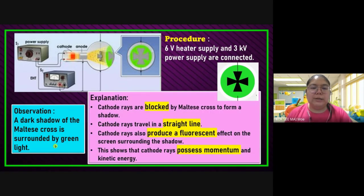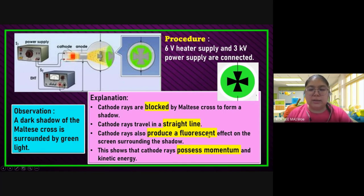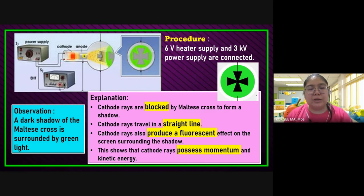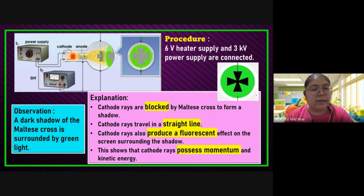You can see a dark shadow of the Maltese cross surrounded by green light. The explanation: cathode ray is blocked by the Maltese cross to form a shadow. Cathode ray travels in a straight line. Cathode ray also produces a fluorescent effect on the screen surrounding the shadow. This shows that cathode ray possesses momentum and kinetic energy. The electron accelerates to the anode, continues to move, hits the surface, and produces green light. If the electron never moves into the tube, you cannot see the green light — you only see yellow. After you put extra high tension, the electron gains enough energy, accelerates, and hits the screen — producing green light.